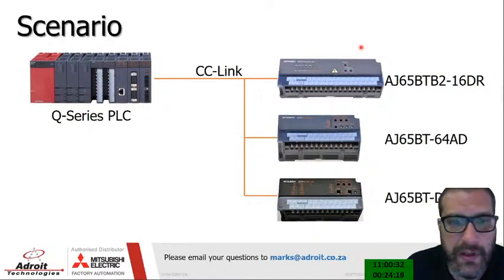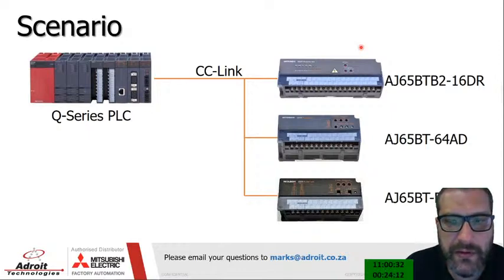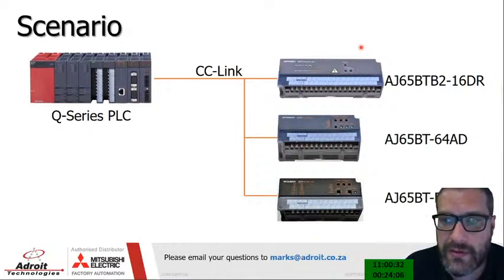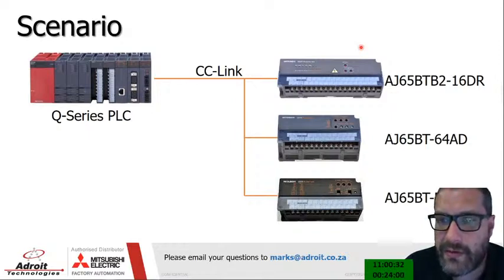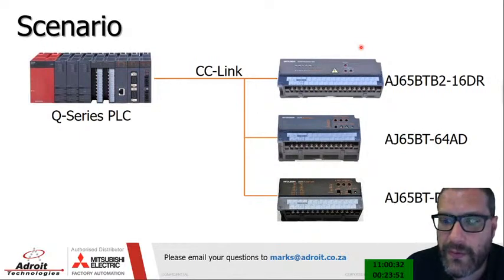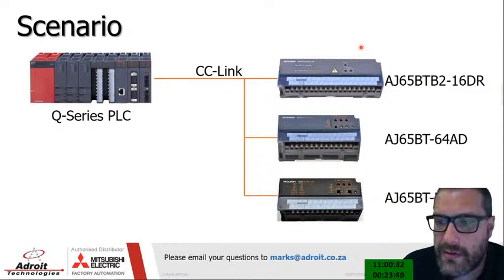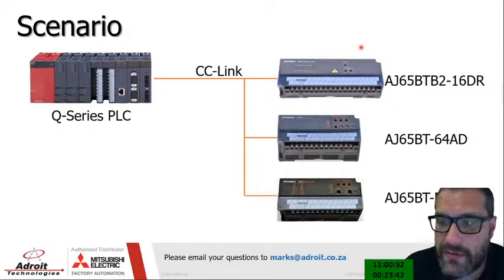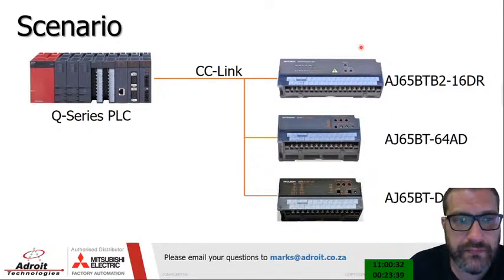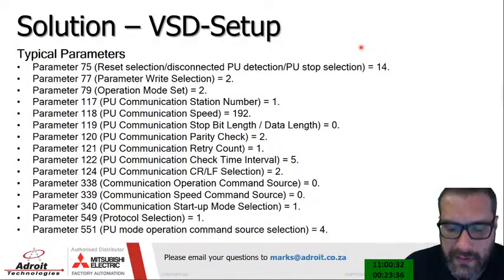In our scenario, we have a Q2 series PLC connecting via CC Link to three remote IO devices: a 16DR output model, a 64AD four-channel analog input model, and a D62 analog output model.